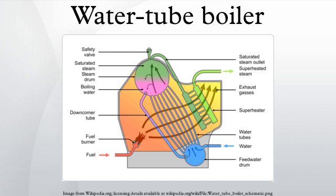A water-tube boiler is a type of boiler in which water circulates in tubes heated externally by the fire. Fuel is burned inside the furnace, creating hot gas which heats water in the steam generating tubes.